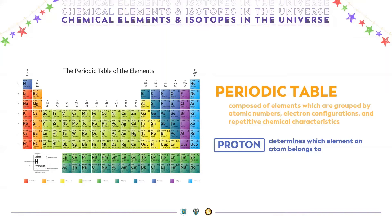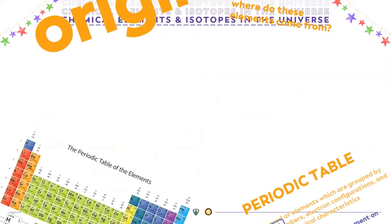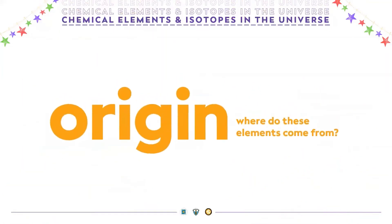We disregard the electrons when looking at the mass because protons and neutrons are much more massive than electrons. So, where do these chemical elements come from?